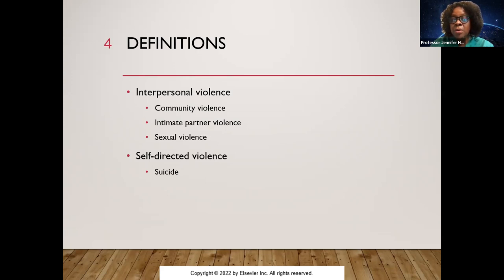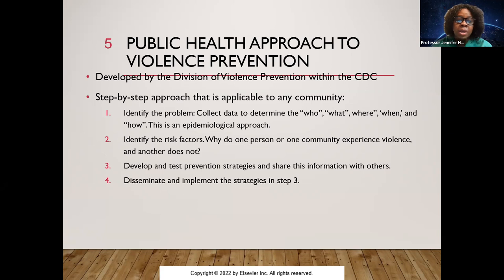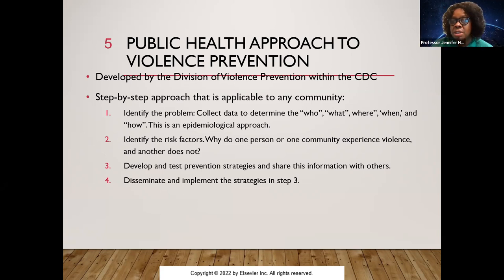Intimate partner violence includes physical, sexual, or psychological harm including stalking, caused by a current or former partner or spouse. Sexual violence refers to sexual activity when consent is not obtained and is not freely given. Suicide, in contrast, is self-directed harm. In Chapter 27, Figure 1, there's a step-by-step approach applicable to any community: identify the problem, identify the risk, develop strategies, share information with others, and disseminate the strategies. The CDC's four-level socio-ecological model includes: individual, relationship, community, and societal levels.